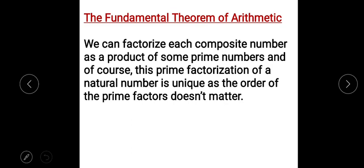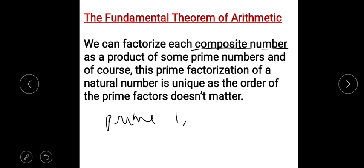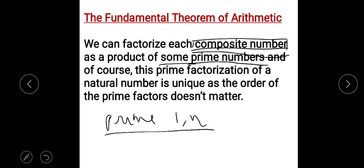The Fundamental Theorem of Arithmetic states that we can factorize each composite number. Prime numbers are numbers which have only two factors: 1 and the number itself. All numbers other than prime numbers are composite, meaning they have more than two factors. Any composite number can be written as a product of prime numbers — this is called prime factorization — and it is always unique.